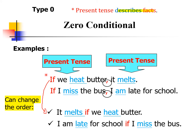Another reminder: whenever you put the if clause at the beginning of the sentence, you have to add a comma after it. If you want to express it the other way around — putting the main clause first, like 'it melts if we heat butter' — you can change the order. The if clause and main clause are interchangeable, but if you put the main clause first, don't put a comma there. You only put the comma when the if clause is at the beginning.